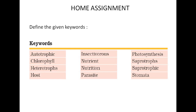Define the given keywords: autotrophic, chlorophyll, heterotrophs, insectivorous, nutrient, nutrition, parasite, photosynthesis, saprotrophs, saprotrophic, stomata. This can be repeated somewhere else — if you get the same question in some other questionnaire, you can write the answers again. There is no problem.